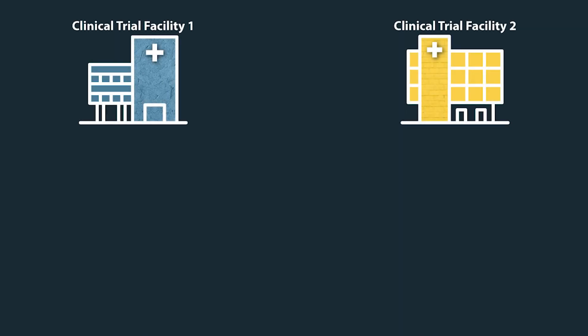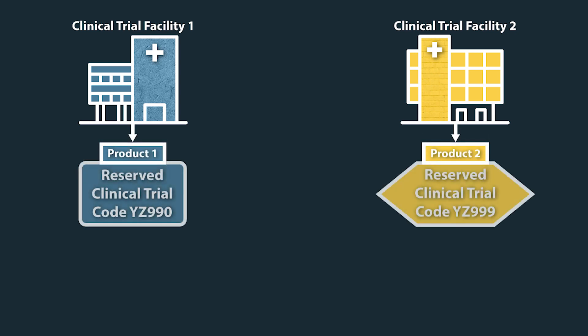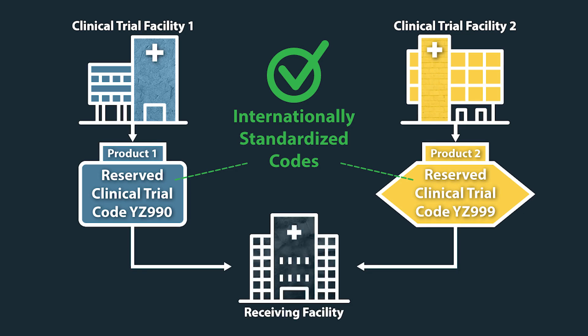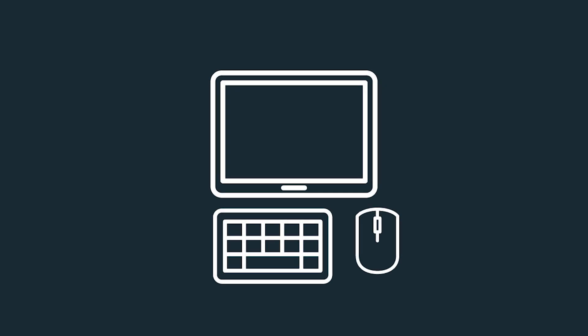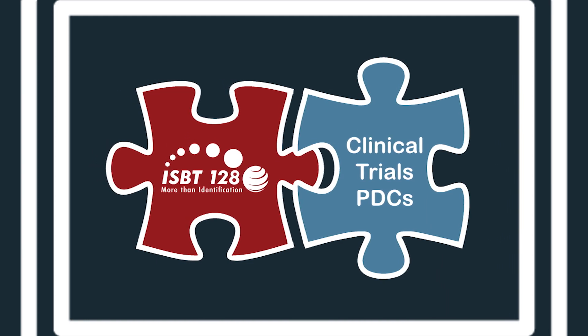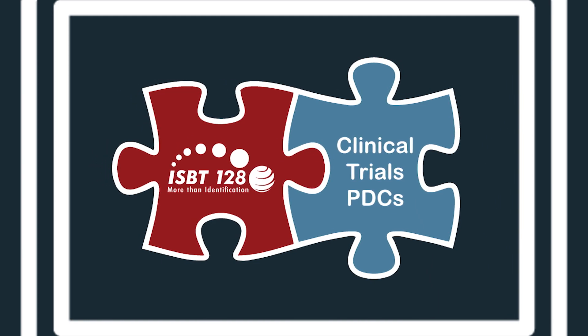ICBA manages and issues ISBT 128 clinical trials product description codes to ensure uniqueness and support product identification and traceability. Facilities already using ISBT 128 can encode clinical trials PDCs into their established software system, allowing for easier implementation of the new codes.